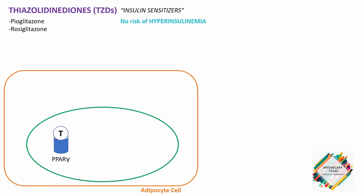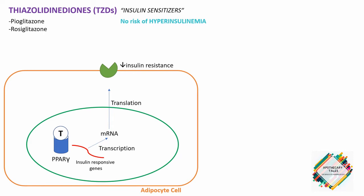For instance, the thiazolidinedione gains entry into the adipocyte cell and acts particularly on the PPAR-gamma receptor. This receptor further causes transcription of insulin-responsive genes to mRNA, which then gets translated. This is the way it reduces insulin resistance by making more receptors available on the surface of the cell, thereby enabling uptake of more glucose. Rosiglitazone has greater affinity towards PPAR-gamma, and pioglitazone also acts on PPAR-gamma compared to PPAR-alpha.